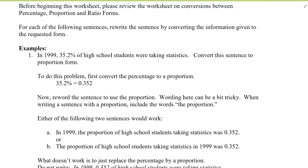In 1999, 35.2% of high school students were taking statistics. Convert the sentence to proportion form. Before we convert it to sentence form, we need to convert the percentage to a proportion. To convert percentage to proportion, notice the word percent — percent means per 100. So you can think of 35.2% as 35.2 per 100.